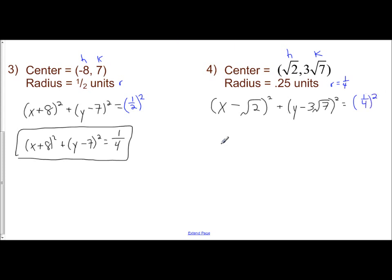Copy it on the left side as is. The quantity x minus radical 2 squared, plus the quantity y minus 3 radical 7 squared, equals square the top, square the numerator, square the denominator, 1 16th. And there are the equations represented by, given the center and the radius.